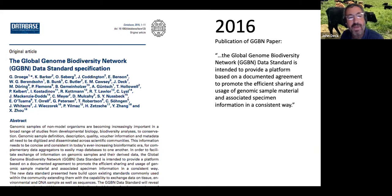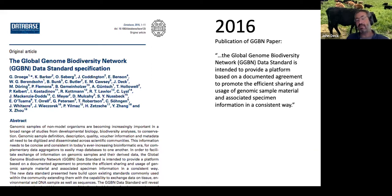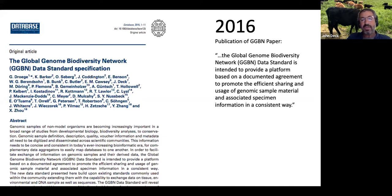In 2016, there was a paper from the Global Genome Biodiversity Network with a long list of authors, which brought together a lot of people in the community to document GGBN. It describes the gaps: no data standard to cover all types of genomic samples, not all existing standards already have technical implementations, no open-source software for managing DNA and tissue collections — and then describes what GGBN offers.